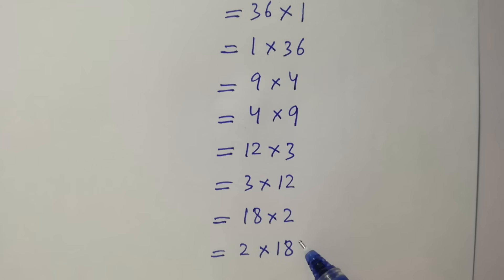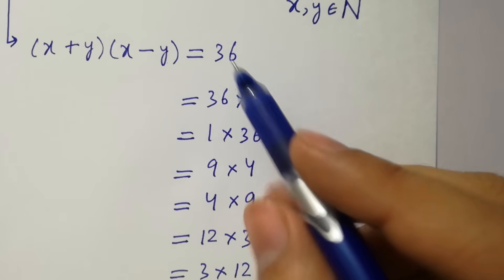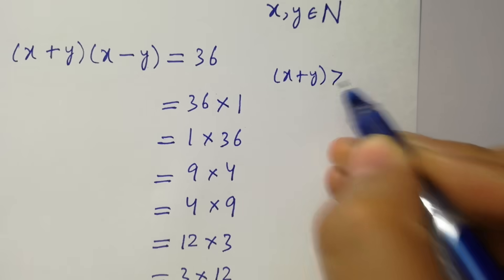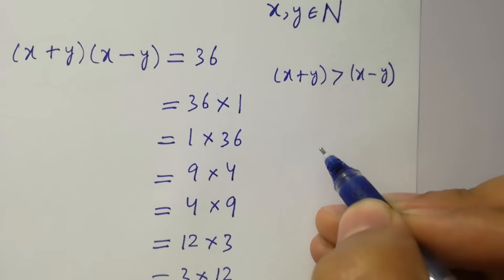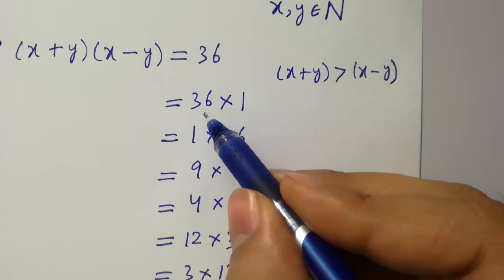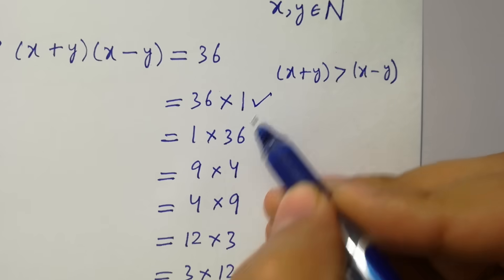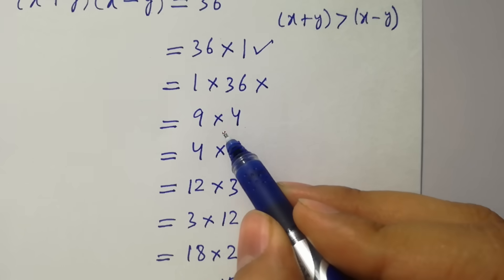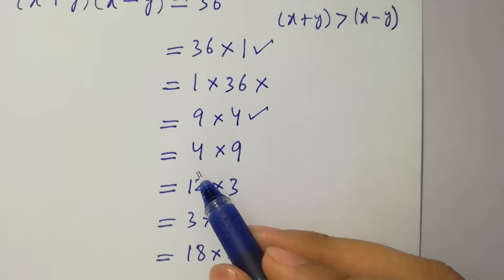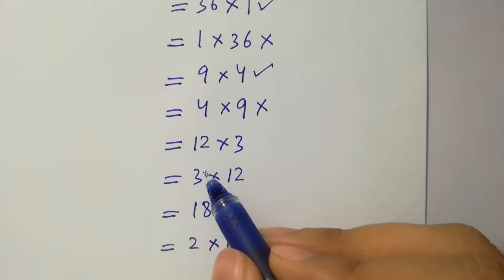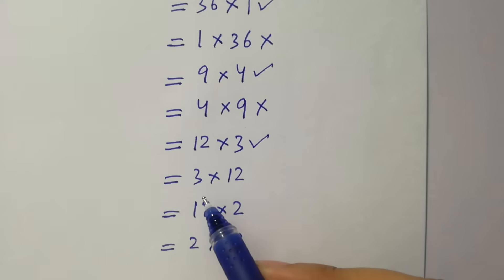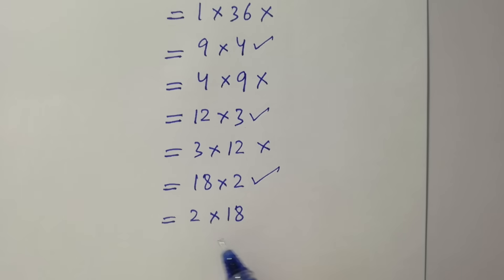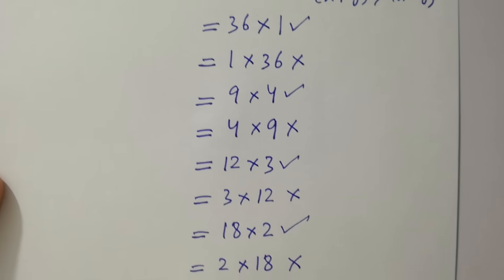By comparison, x plus y must be greater than x minus y. So: 36 > 1 — possible; 1 < 36 — not possible; 9 > 4 — possible; 4 < 9 — not possible; 12 equals 12 — not possible; 18 > 2 — possible; 2 < 18 — not possible.